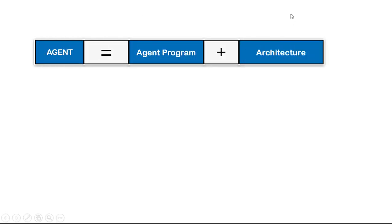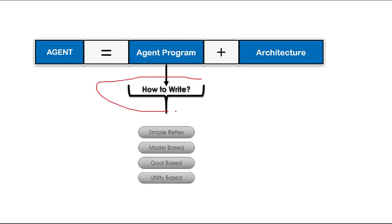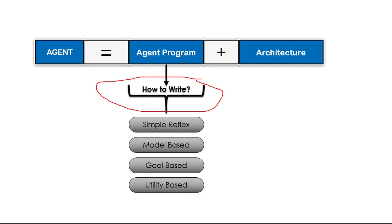We know that an intelligent agent is a combination of agent program and agent architecture. The agent function for an artificial agent will be implemented by an agent program. We can write the agent program in four different ways depending upon the type of agent, or you can say the functionality of the agent and the environment in which the agent is going to be placed.